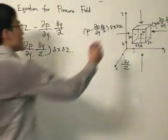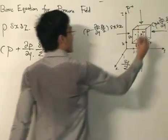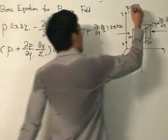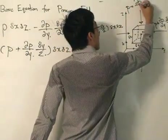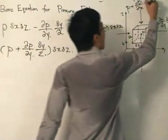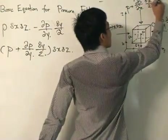Now, what about the top and the bottom? Well, this one would be pressure plus—because we're moving up in the z direction—partial P partial z, the change in pressure in the z direction, multiplied by delta z divided by 2, because that's the change in distance, times delta x delta y.